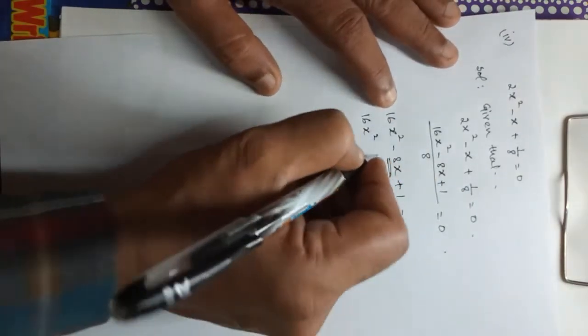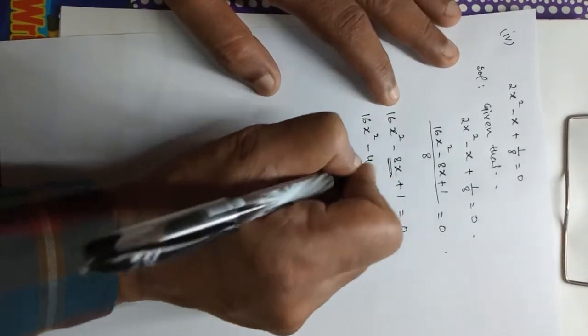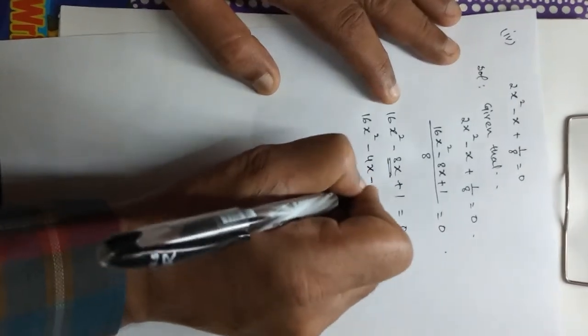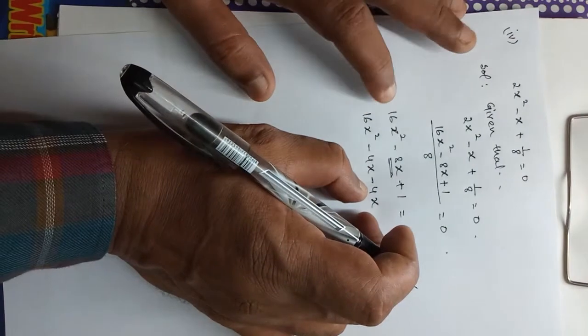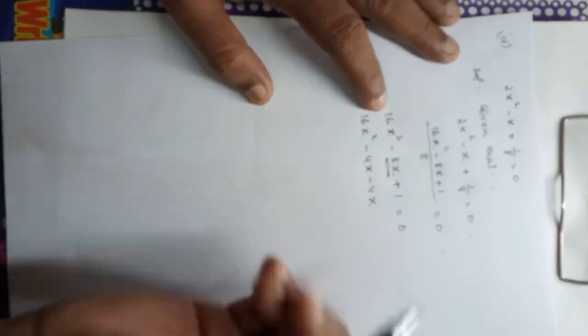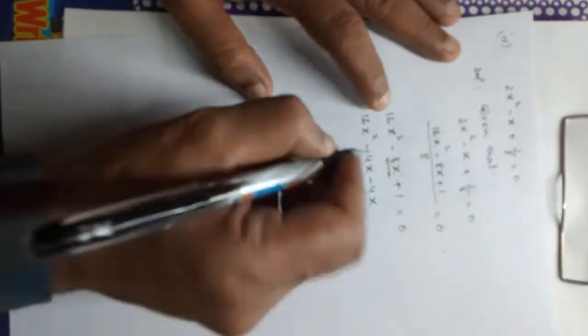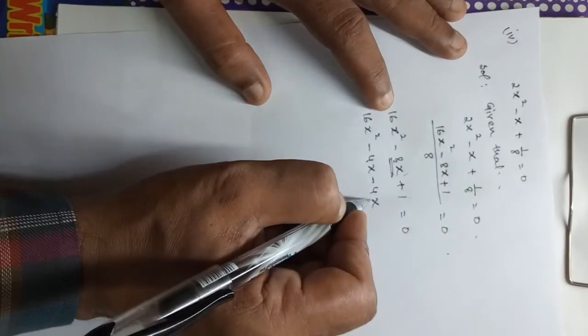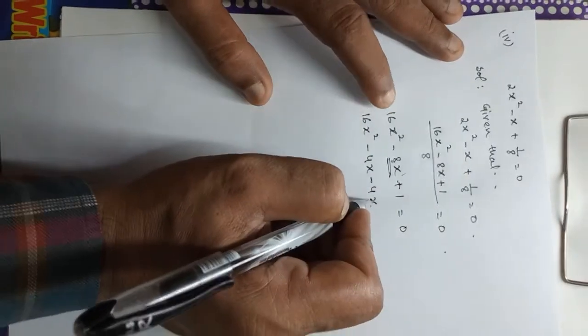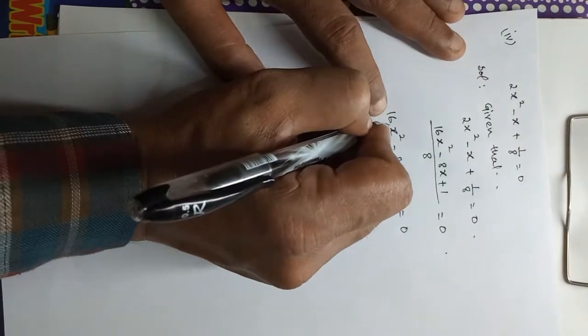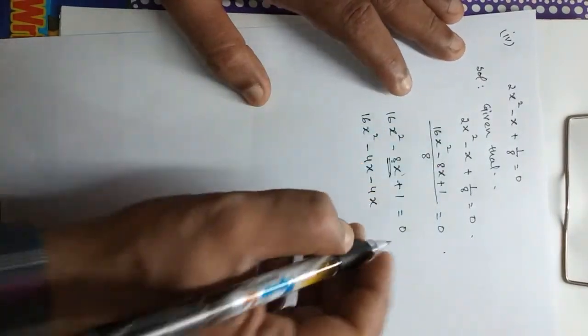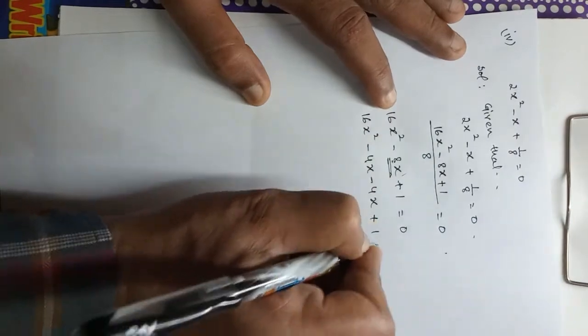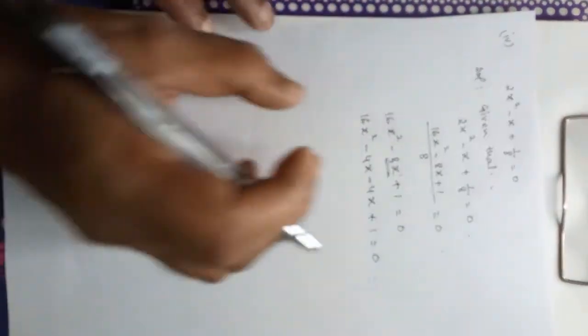So let's see this factor. This is going to be 16x square. Now we will make this factor. So minus 4x and minus 4x. If we add minus 4x and minus 4x, then we will add minus 8x. Then we will add 4 into 4. So 4 into 4 is equal to 16. So 1 into 16. Then we will add this factor. Plus 1 is equal to 0.